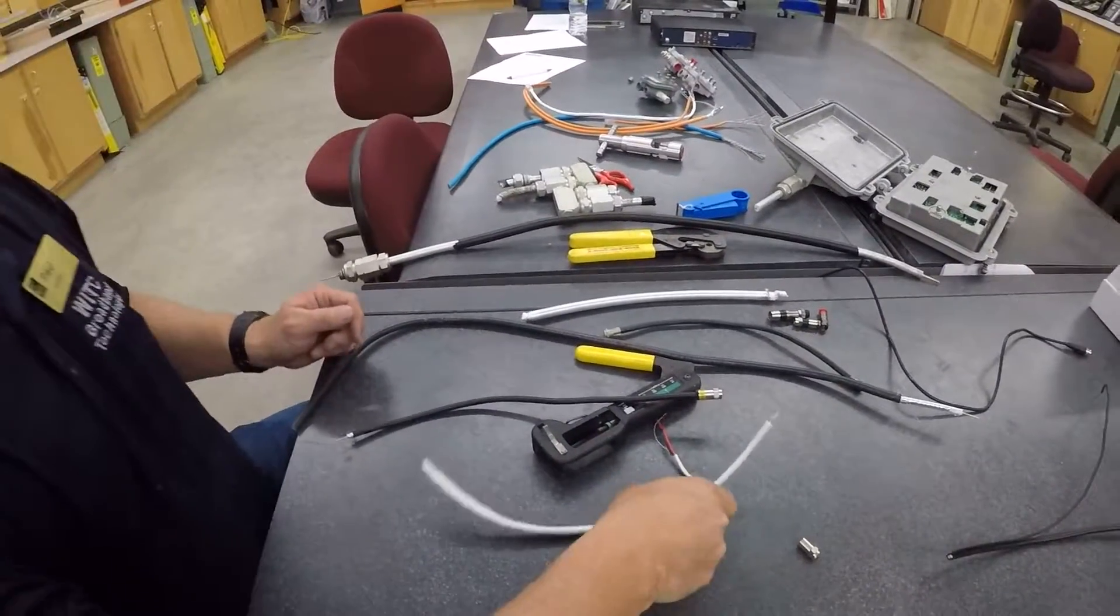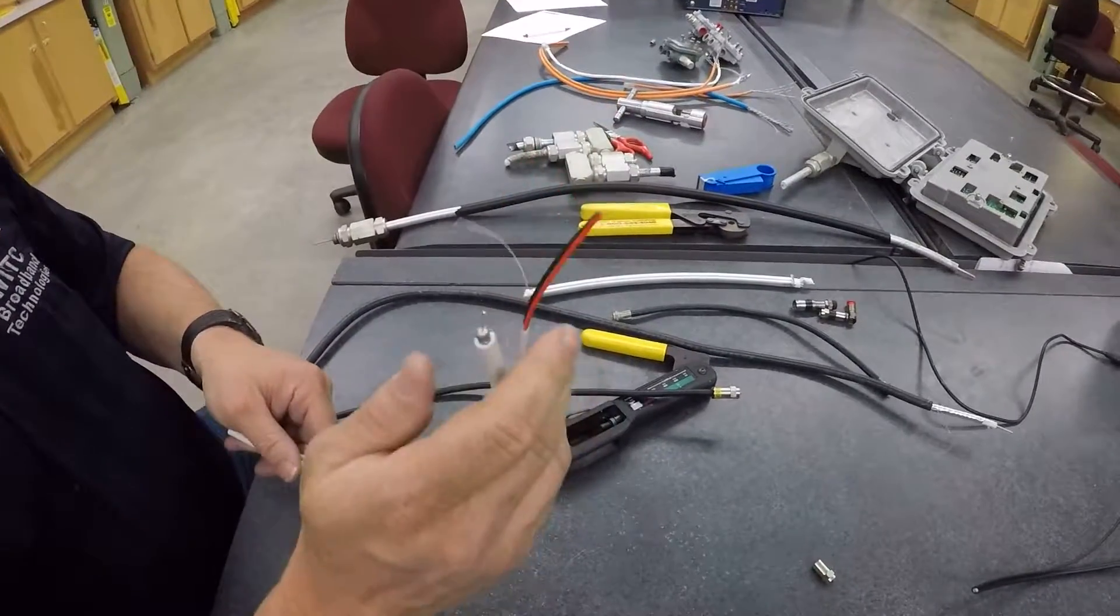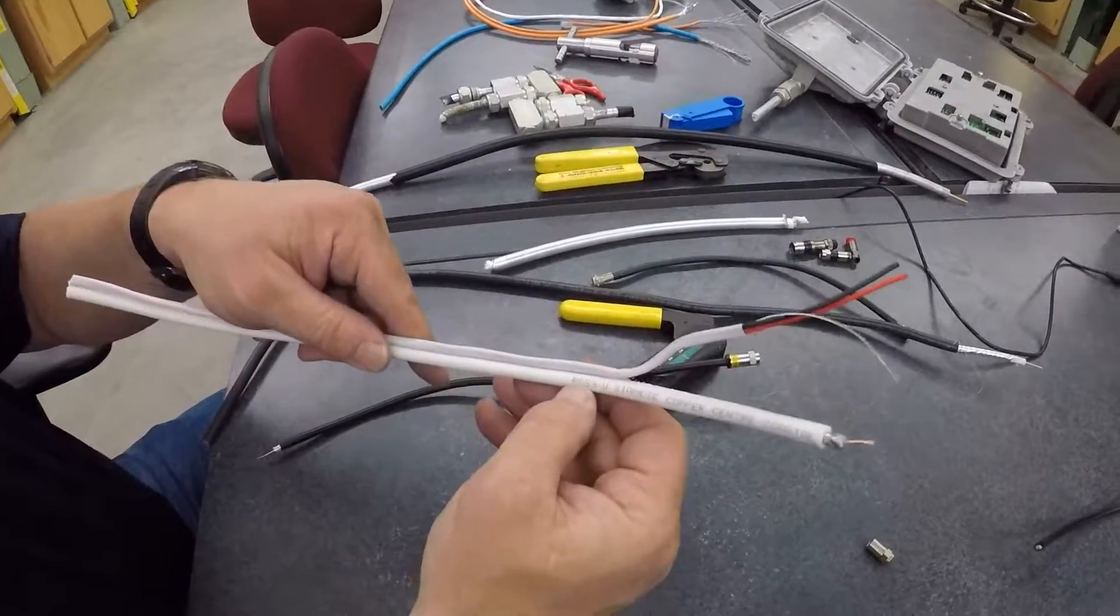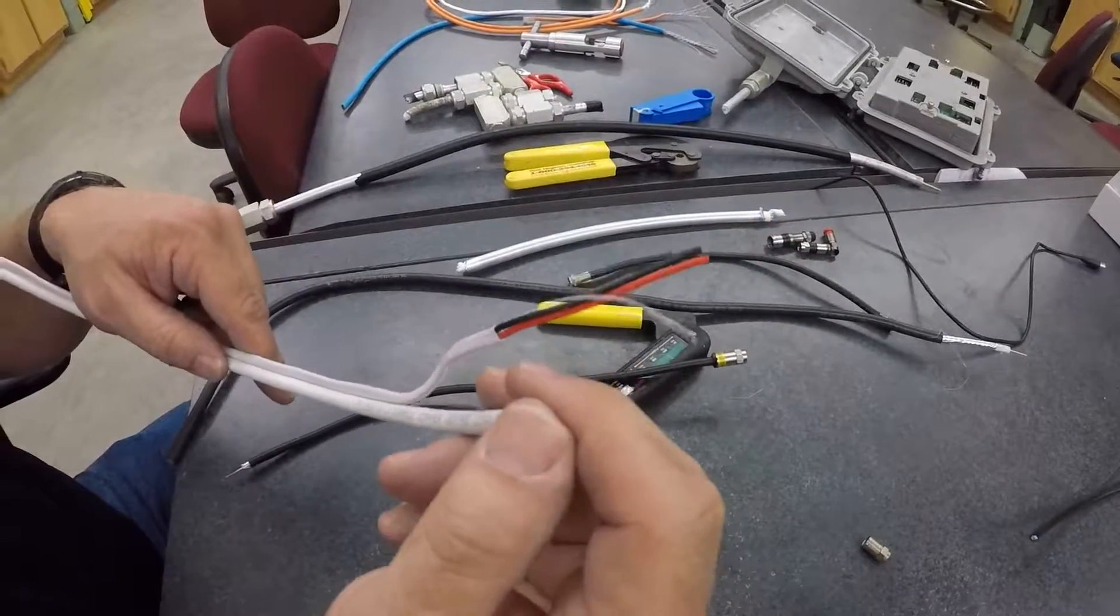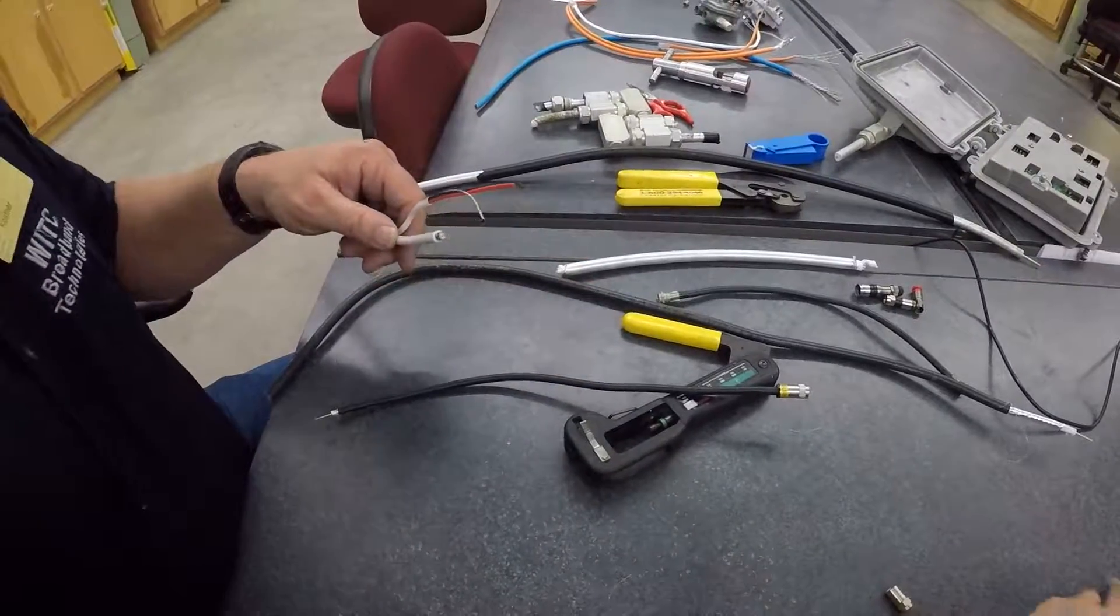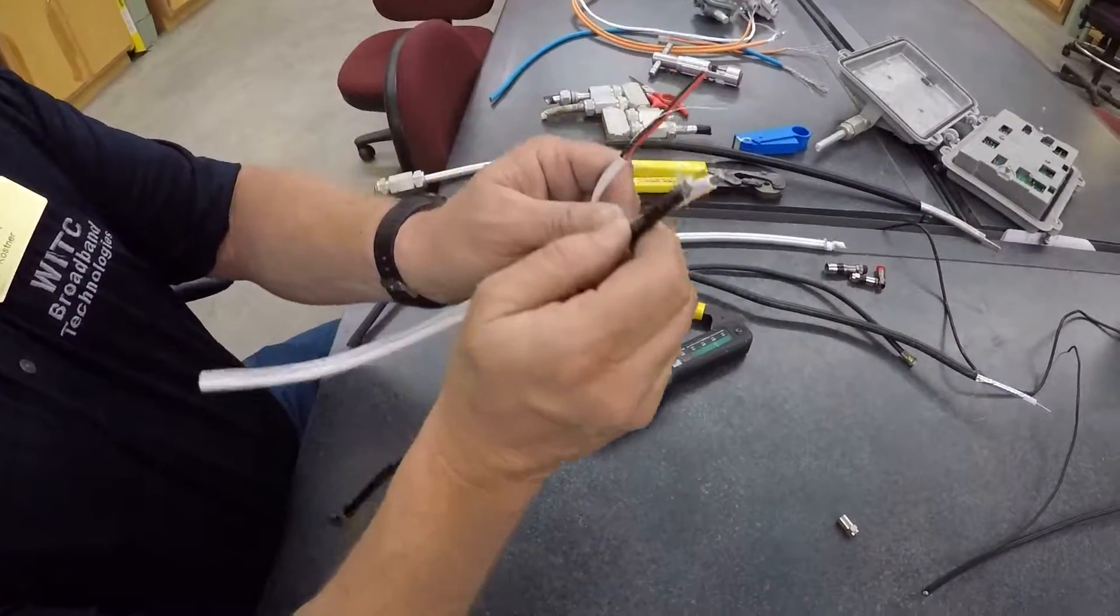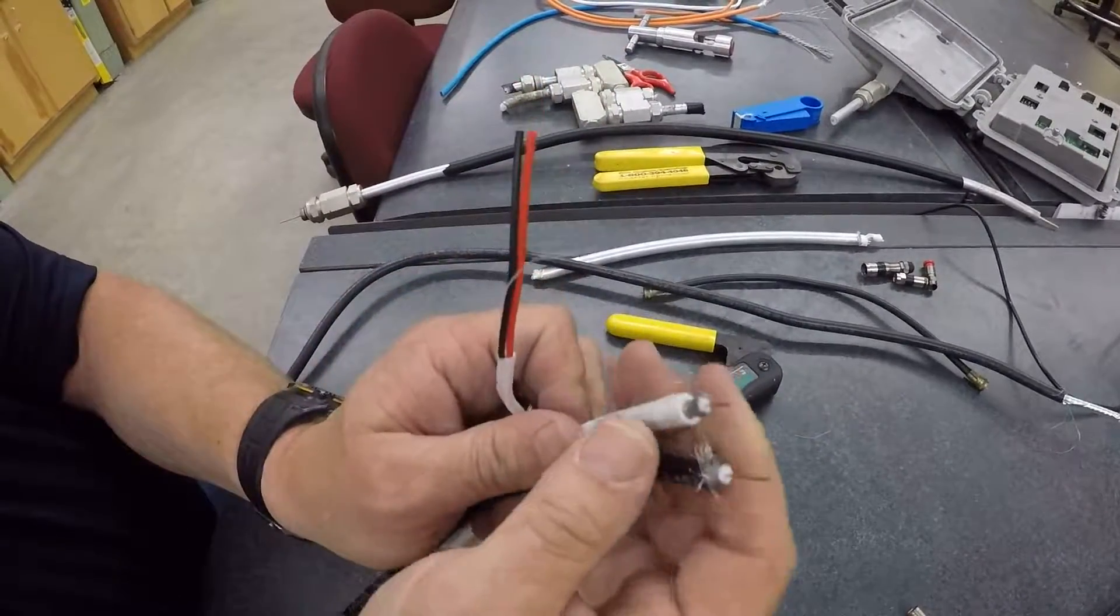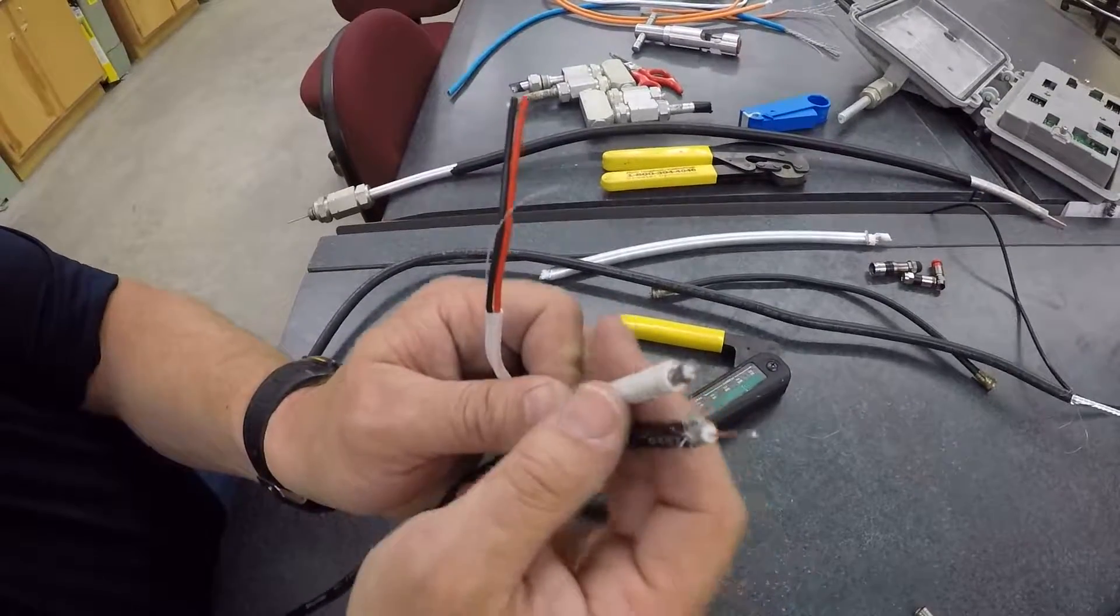The next type of cable is, this is a cable that we use for video surveillance. Once again, this is RG59. So the difference between 59 and 6 is that your center conductor is a little bit smaller, you can see that, and your dielectric is a little bit smaller.